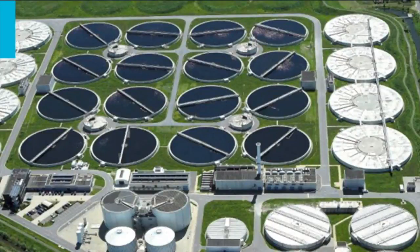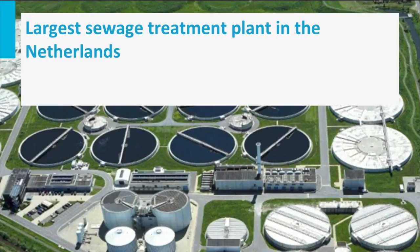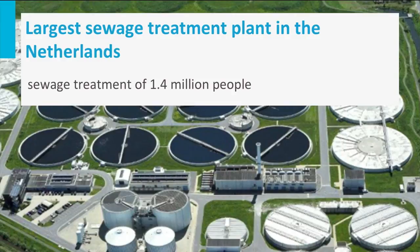How does the sewage treatment plant look like? This picture shows the largest sewage treatment plant in the Netherlands, here in Delft. It has the capacity to treat the sewage of about 1.4 million people. It is a modern treatment plant that removes organic matter, as well as nutrients — phosphorus and nitrogen — from the used water up to the restrictions set by law.